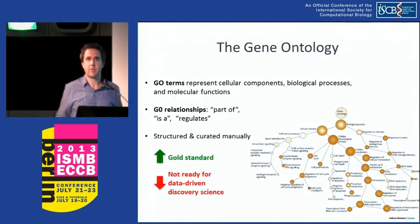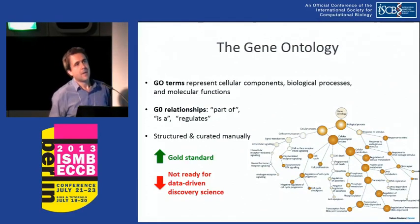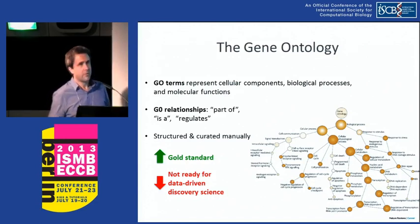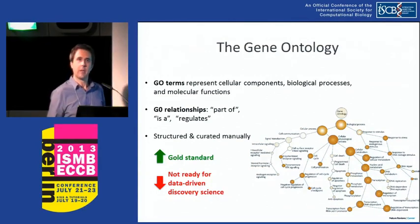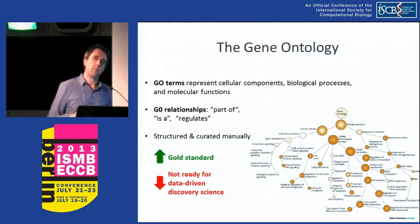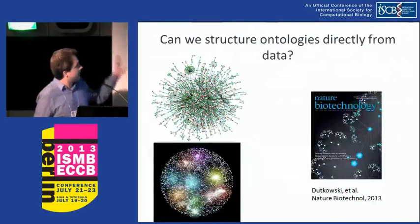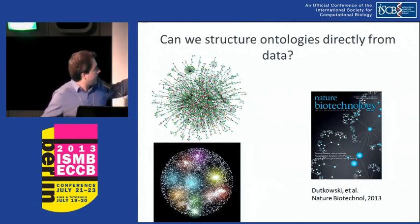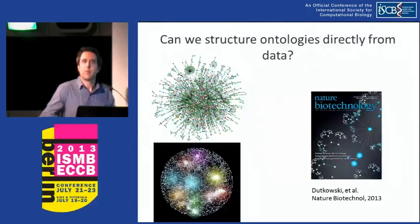The reason it is a gold standard is really because it's manually curated — biological experts go in, read papers, and annotate the Gene Ontology with new terms and relationships. But at the same time, it's really impossible for the structure to discover anything new. We're stuck with a model that's very static. People have to write papers about a new component, others have to read those papers and put those components into the model. The question we ask is: given large-scale molecular networks and the amount of data we have today, can we take these networks and try to structure an ontology directly from data?